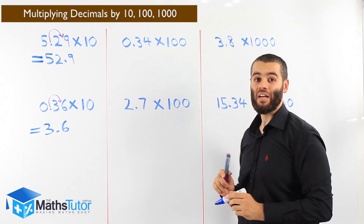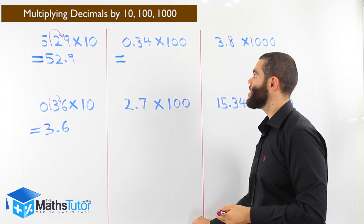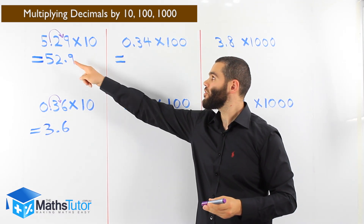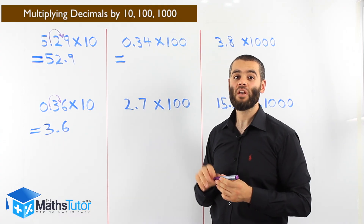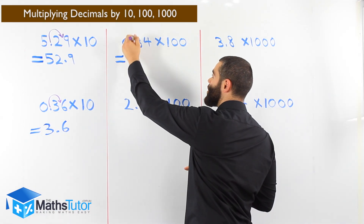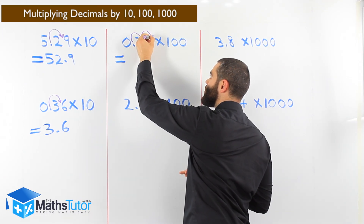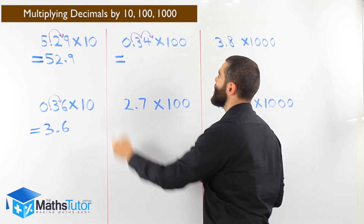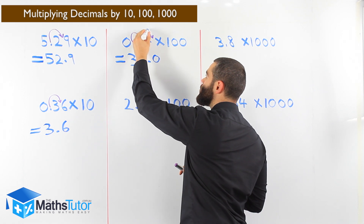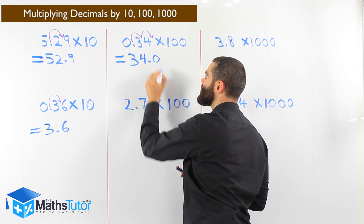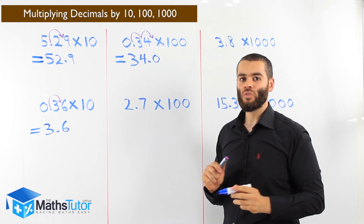0.34 times 100. With ten we had one zero, so we moved once to the right. In this case we're multiplying by a hundred. A hundred has two zeros, so we're moving twice to the right. We grab the point and say, you don't belong over here — we're going to move you twice to the right. One, two. Our answer will be 34.0, or just 34. Both answers are correct. We moved it twice because we're multiplying by a hundred, which has two zeros.